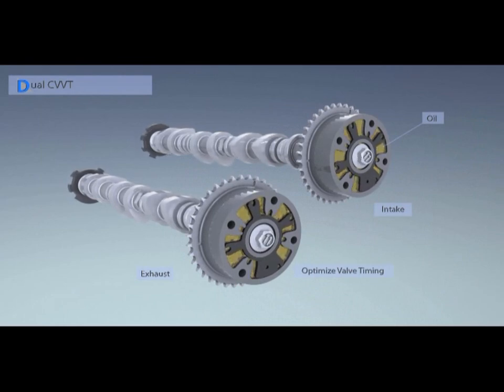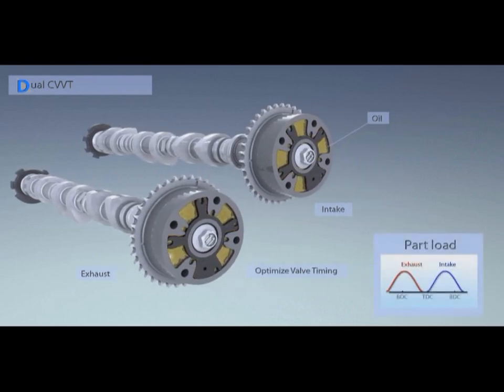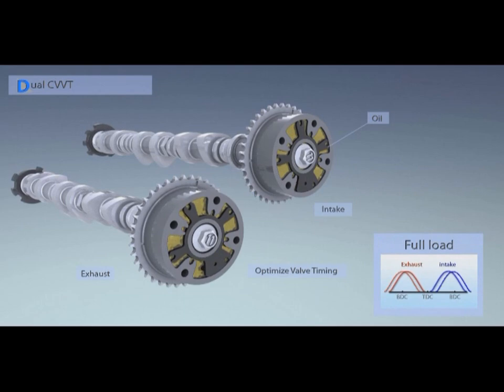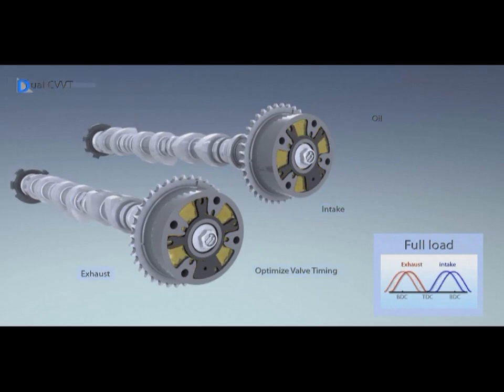Dual CVVT opens and closes the valves at the optimal time, thus achieving high performance, fuel economy and low exhaust emissions. CVVT operates with hydraulic pressure and optimizes the opening and closing timing of the valves.